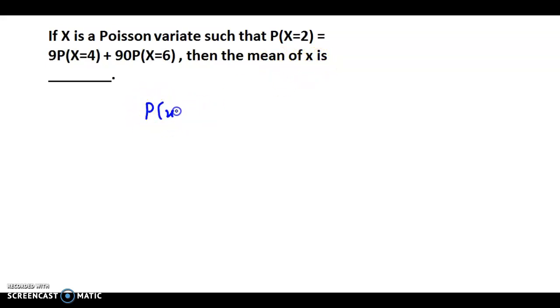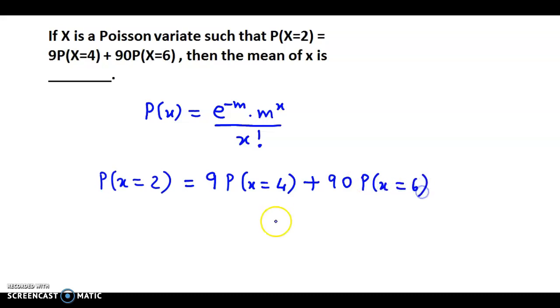Now, we know that for a Poisson distribution, P(X) = e^(-m) × m^x / x!. And the equation is that P(X=2) = 9P(X=4) + 90P(X=6). Now we apply this formula to these three terms.